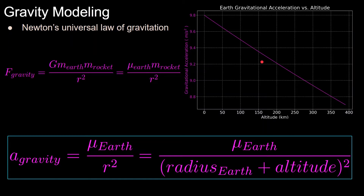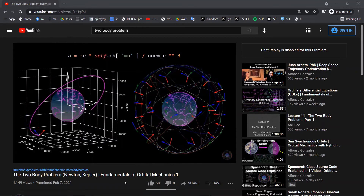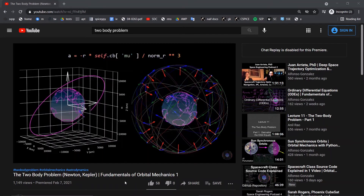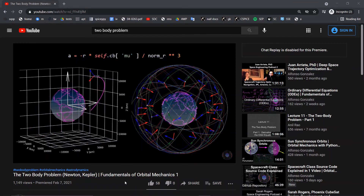Plugging in that equation gives us a graph showing gravitational acceleration as a function of altitude. At Earth's surface we get the expected 9.81 meters per second squared, and going up to around 400 kilometers altitude, the acceleration due to gravity is around 8.7 meters per second squared. Since this is a function of altitude, we must calculate gravitational acceleration at every single time step. I'll have a link in the description to a video covering the two-body problem and Newton's universal law of gravitation in much more detail.